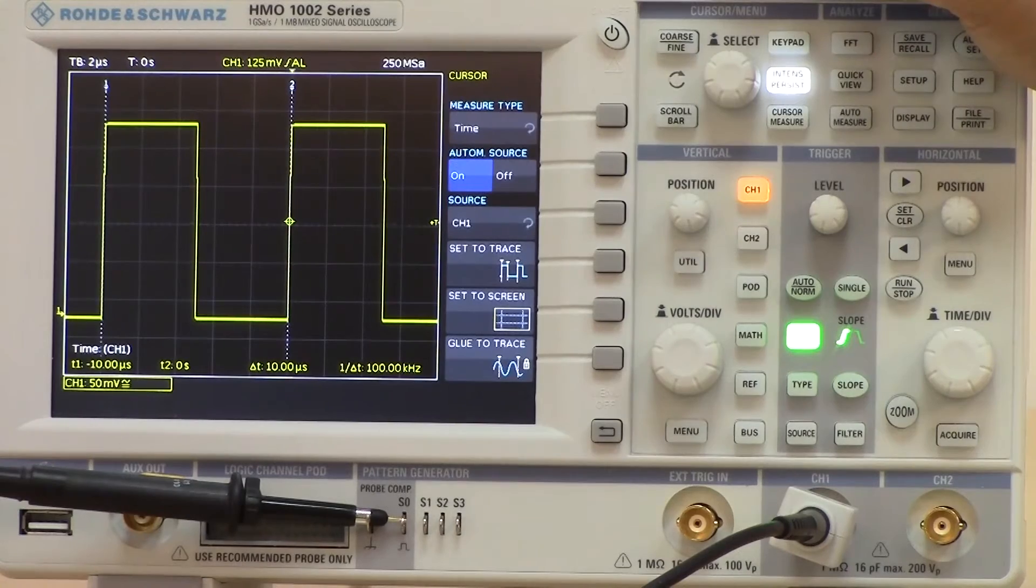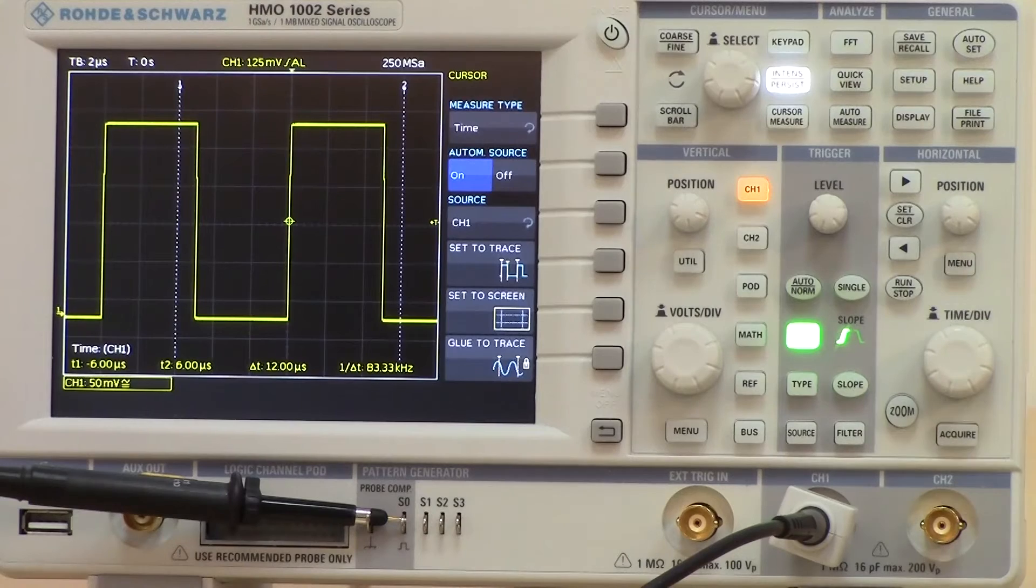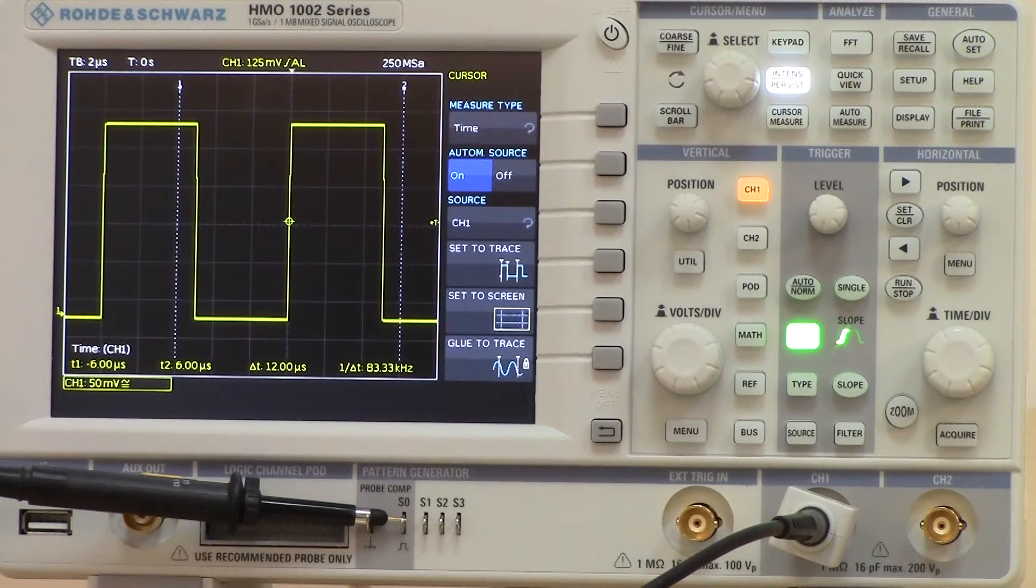If for any reason the cursors are away from the screen, we can hit the set to screen button and it just brings the cursors back into focus.